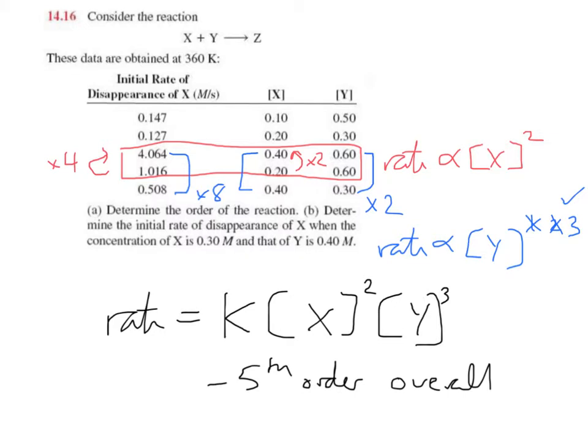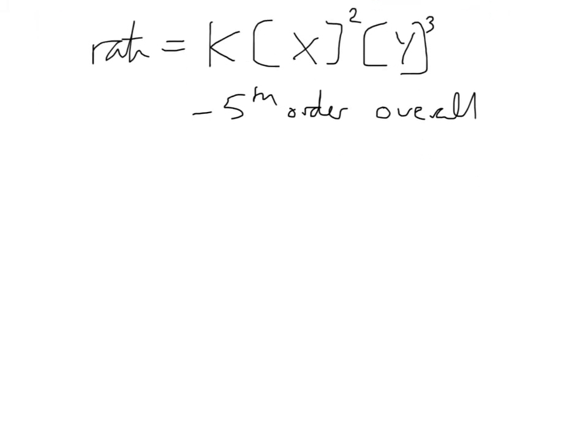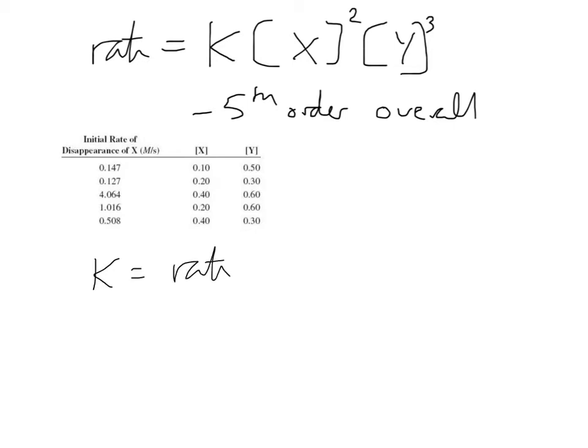In the last part of the problem, we're given the initial concentration of X and Y, and we're told to find the initial rate of disappearance of X. Basically what we're going to do is substitute in for X and for Y, and we're going to calculate the rate. Clearly there's one more thing we need, and that's our rate constant K. Let's go ahead and solve for that.